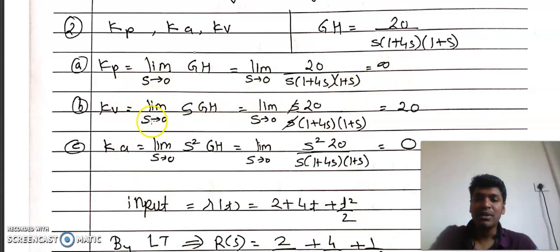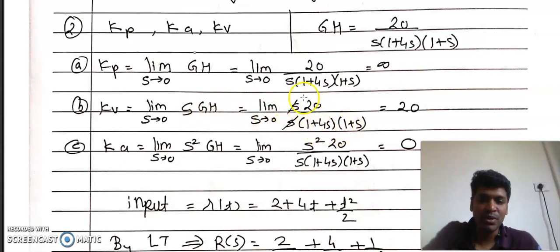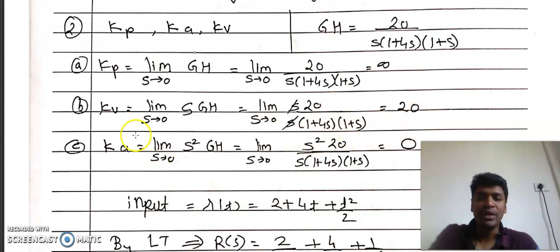Kv = lim(s→0) s·G·H = lim(s→0) s · 20 / [s(1+4s)(1+s)]. The s cancels; substituting s=0 gives 20 / [(1+0)(1+0)] = 20. So Kv = 20.